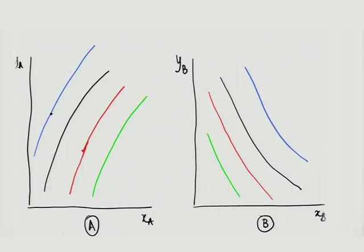Zeroth law says: because they are not on corresponding isotherms, Q can be nonzero. How do we know whether heat interaction is taking place? The moment there is a heat interaction, first law comes into operation: Q equals delta-E plus W. We have already prevented W, so the moment there is Q, there is delta-E. The moment there is delta-E, the state will change — that tells us whether there is a heat interaction or not.